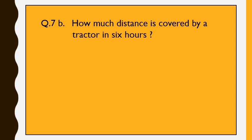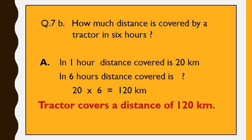Our next question is: how much distance is covered by a tractor in 6 hours? As per the table, we know that a tractor covers a distance of 20 km in 1 hour. So, in 6 hours, we cross multiply and divide: 20 multiplied by 6 gives 120 km. So, the tractor covers a distance of 120 km in 6 hours.